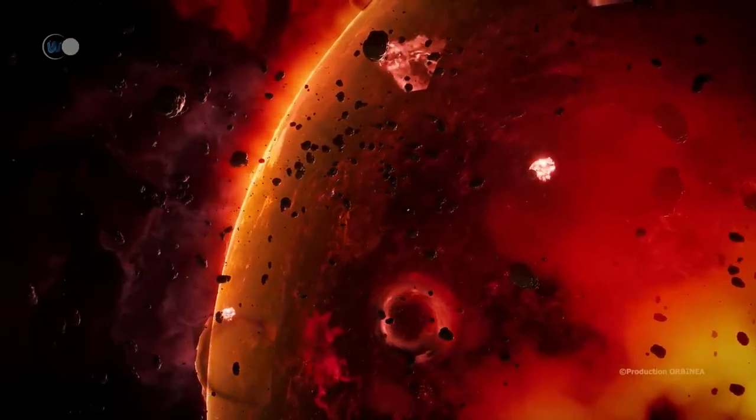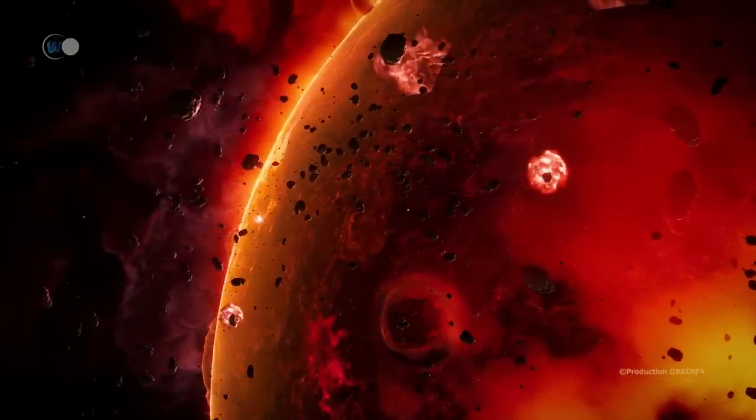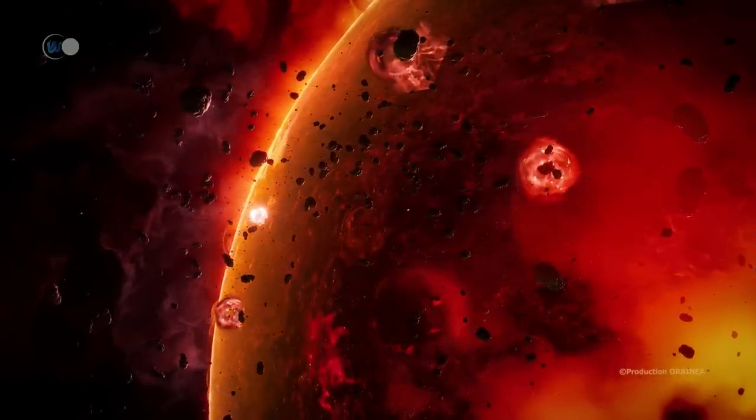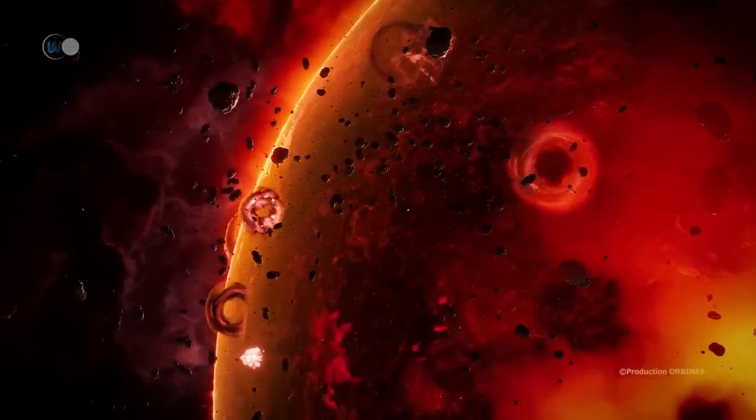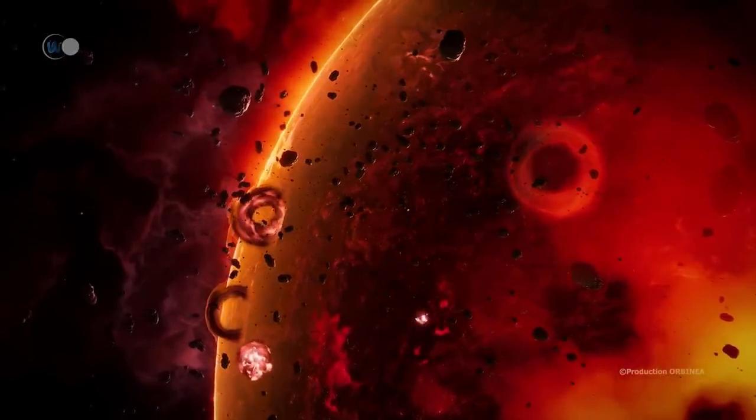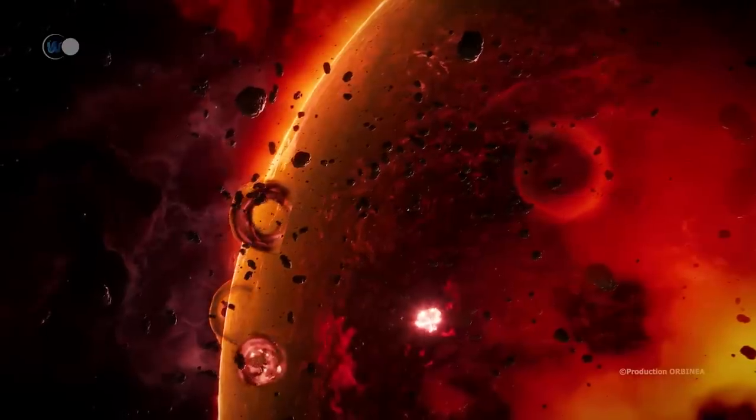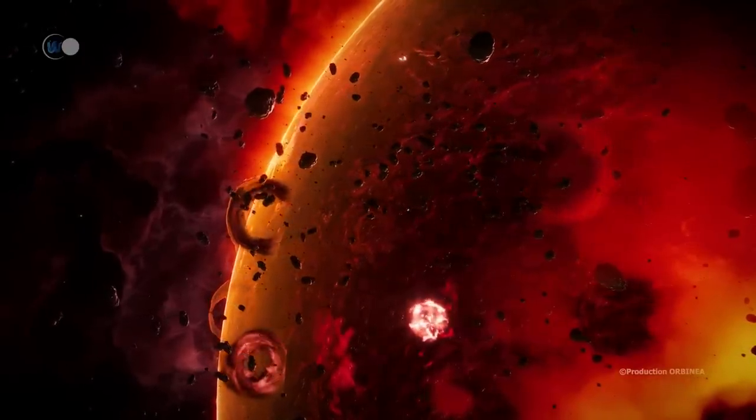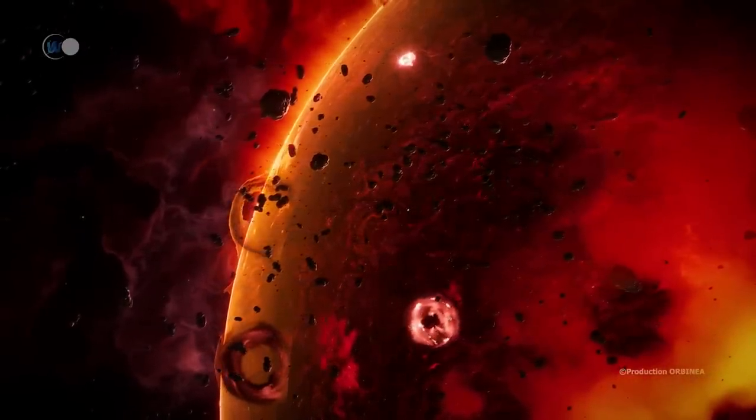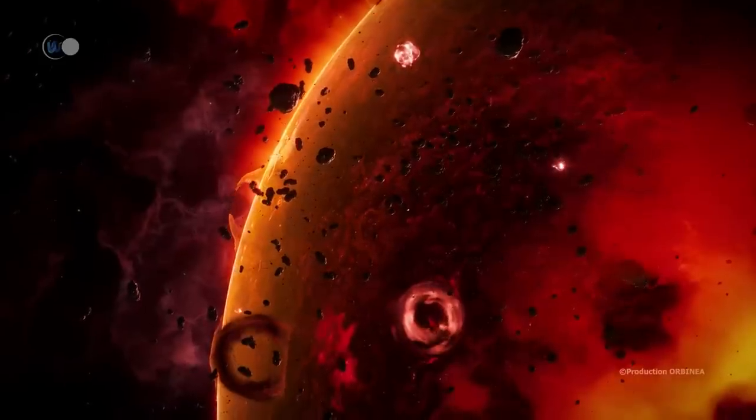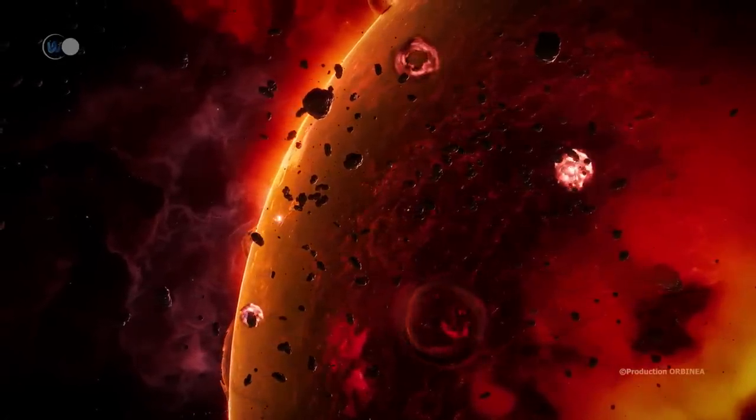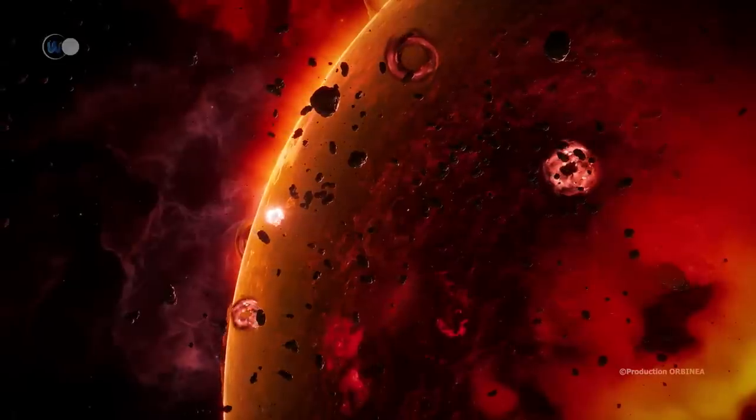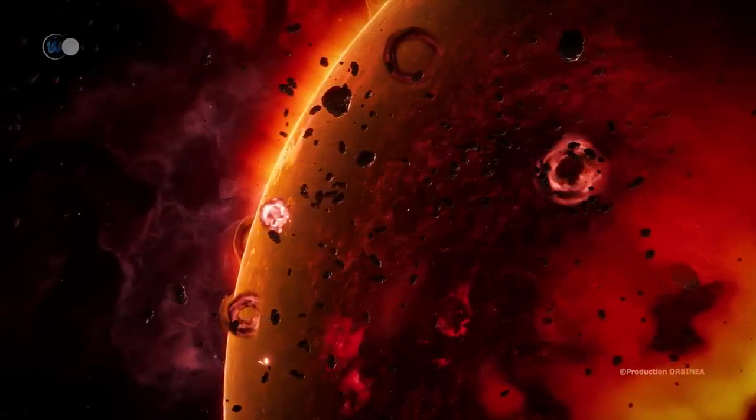Ross 154 is less than a billion years old. No planet has been detected in its environment. In any case, as for a large part of red dwarf stars, the numerous and violent eruptions which burst out at its surface would fatally harm any form of life which could develop in its habitable zone, the planet having necessarily to be close to the star.